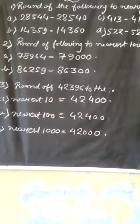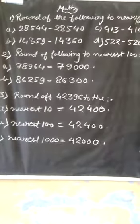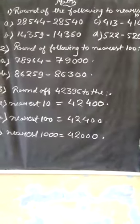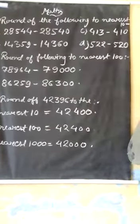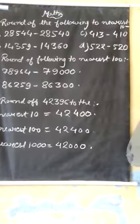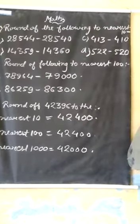And if we round to nearest 1000, it will be 42,000, because 400 is less than 500. After ignoring the ones, tens, and hundreds place, it will be 42,000.